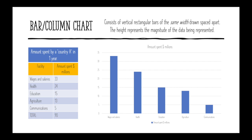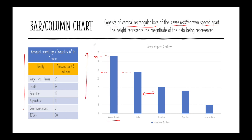Now let's talk about a bar or column chart — this is another way that we can describe our data. We have the same data: the amount of money spent by a country in a year. A bar chart consists of vertical rectangular bars of the same width, drawn spaced apart with a space between them. Each bar represents a different facility. This bar represents wages and salaries, and we can see that wages and salaries are clocking in at around $33 million.